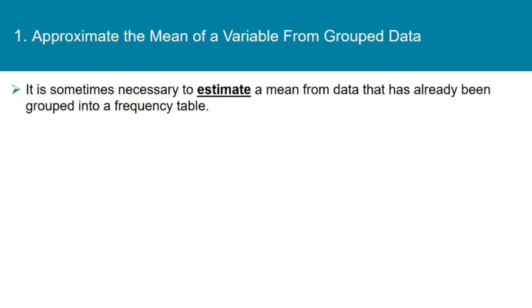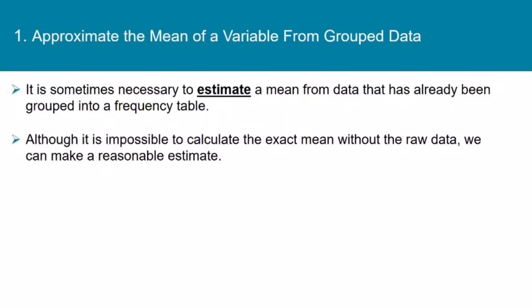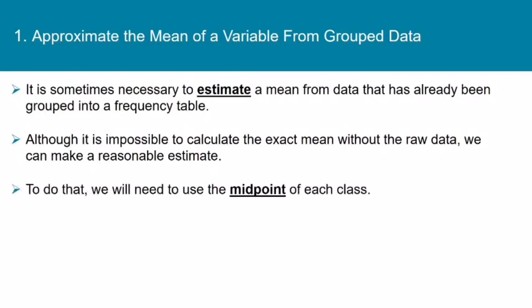If your data is grouped into a frequency distribution and you no longer have access to the original raw data, it's not possible to calculate the exact mean. But sometimes it's necessary to estimate a mean from data that's already been grouped into a frequency table, and we can make a reasonable estimate of this. To do that, we'll use the midpoint of each class.